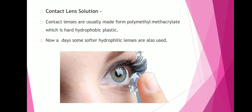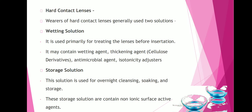Contact lenses are usually made from polymethyl methacrylate, which is a hard hydrophobic plastic. Nowadays, softer hydrophilic lenses are also used. For hard contact lenses, two types of solutions are generally used: wetting solutions and storage solutions. Wetting solutions are used primarily for treating the lenses before insertion and may contain wetting agent, thickening agent, antimicrobial agent, and isotonicity adjusters.